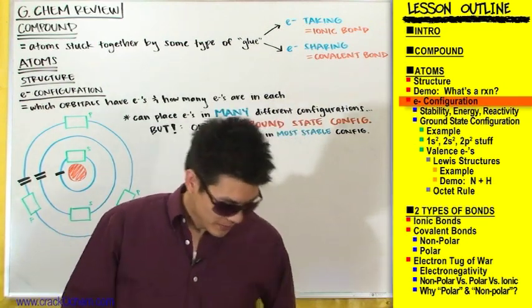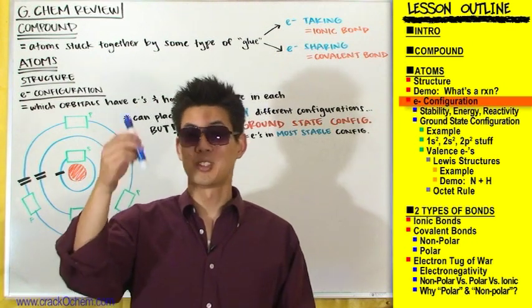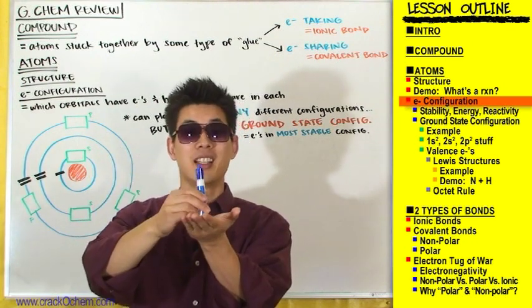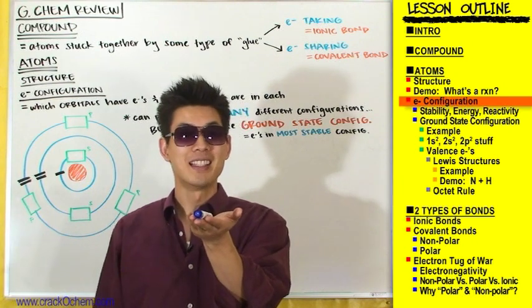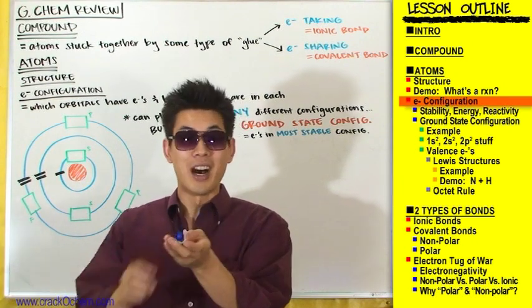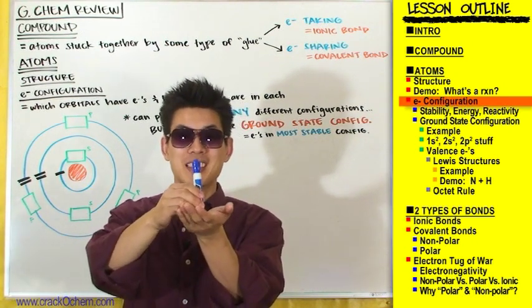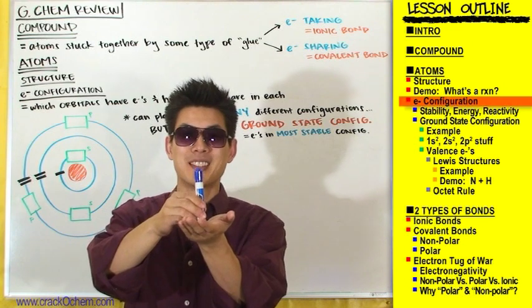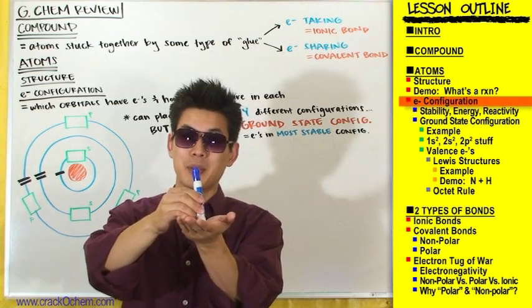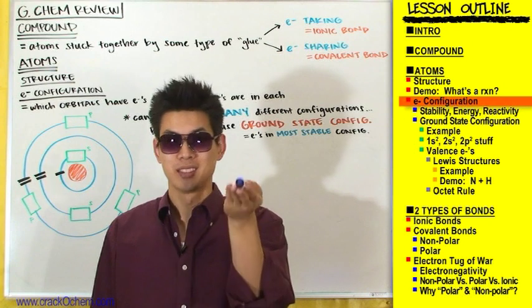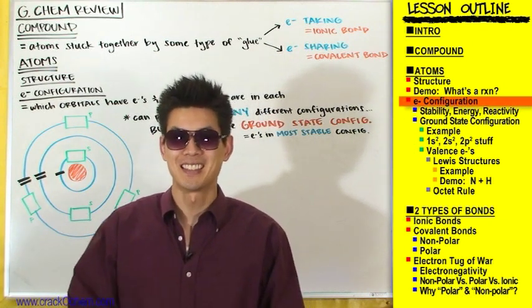Take a marker as an example: is it more stable standing up or lying down? Obviously lying down — it takes a lot of balance to stand up on its own. The marker goes from something unstable to something stable. Stability is always favored over instability.